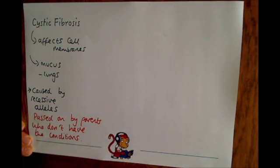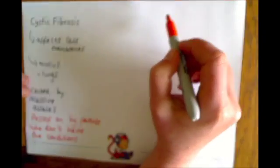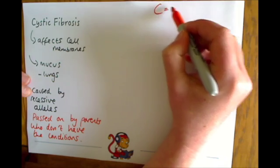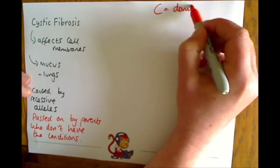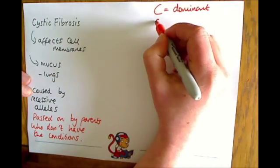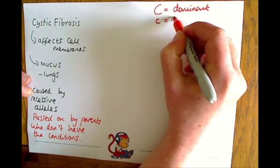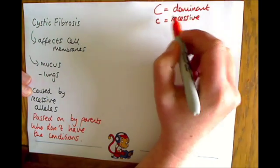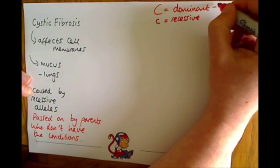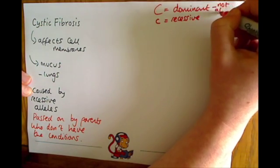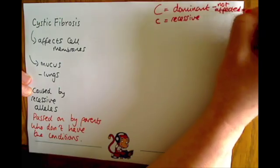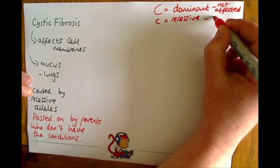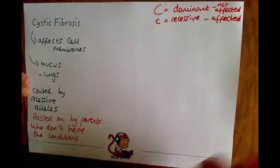It's because these parents can be carriers of that recessive gene. If someone is a carrier, we use the capital C for dominant and the lowercase c for the recessive gene for cystic fibrosis. Capital C means not affected, and lowercase c means you are affected by cystic fibrosis.